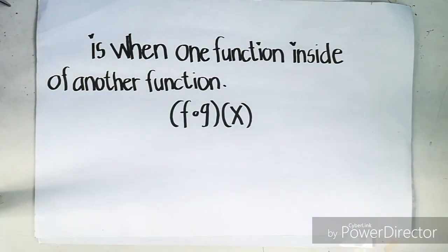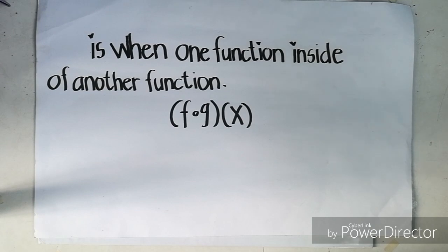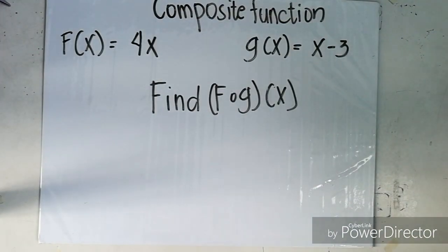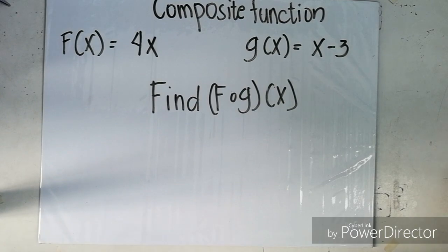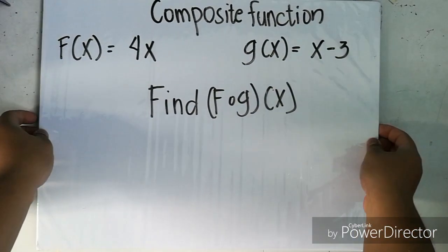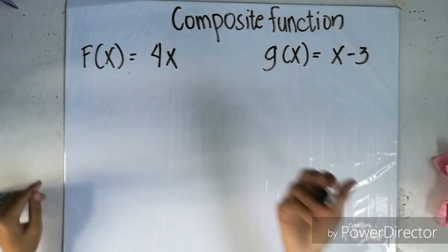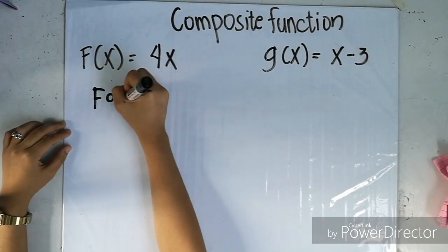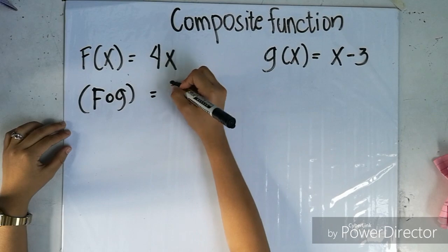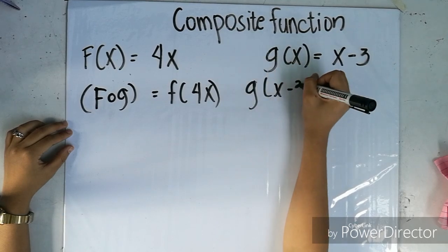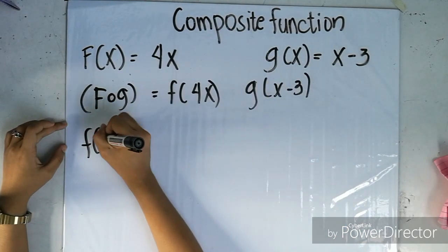We're going to talk about composite functions — when one function is inside of another function. f∘g is the notation used for the composite function when function g is inside of function f. For example, f(x) = 4x and g(x) = x minus 3. Find f composite of g, or simply f of g of x.